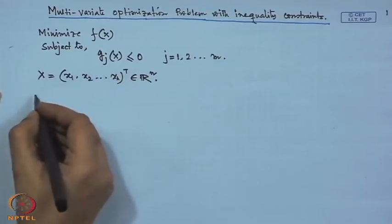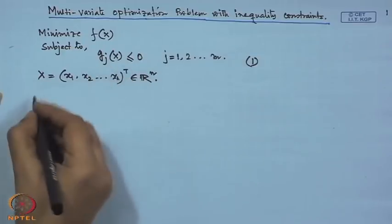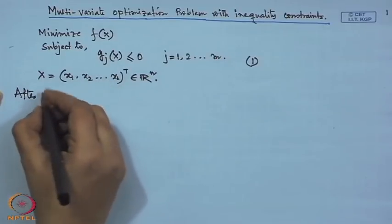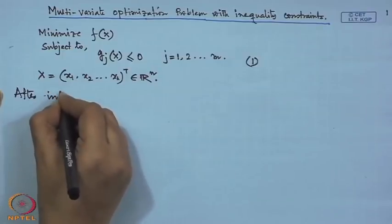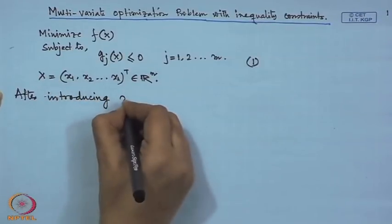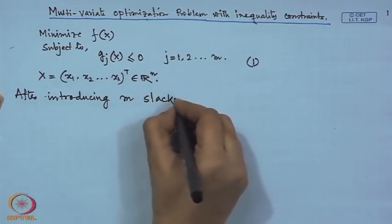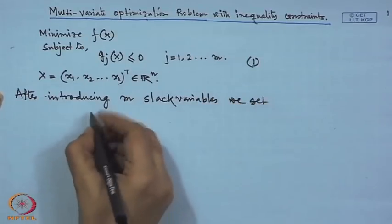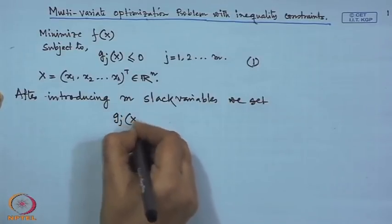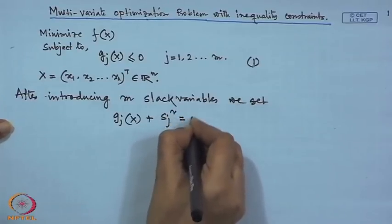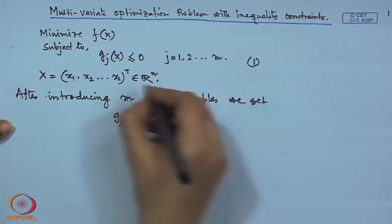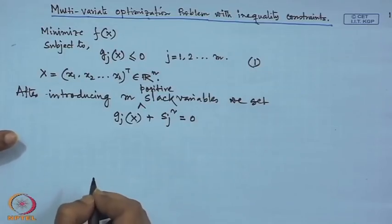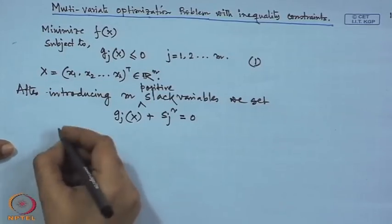To handle the inequality constraints, we introduce m number of slack variables to convert inequalities to equalities. We use the square of the slack variables to ensure they are all positive. Then our problem is reduced to a general classical optimization problem with equality constraints.